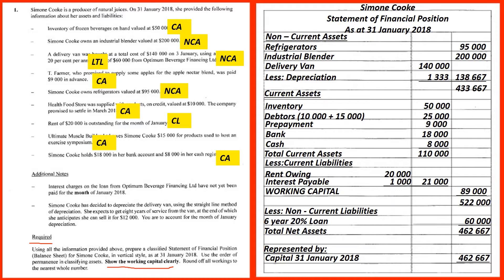From the additional notes: interest charges on the loan from Optimum Beverage Financing Limited have not yet been paid for the month of January — this is a current liability. We need to work out the amount: 60,000 multiplied by 20% divided by 12 equals 1,000.